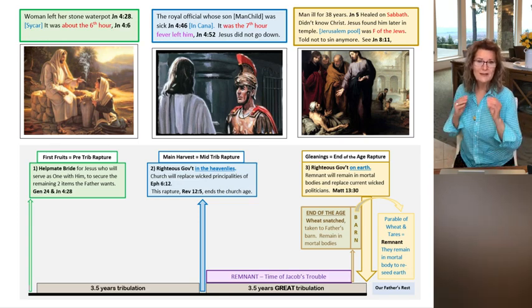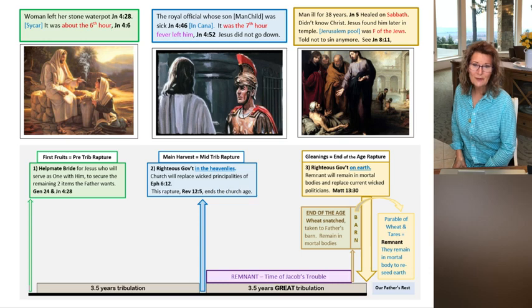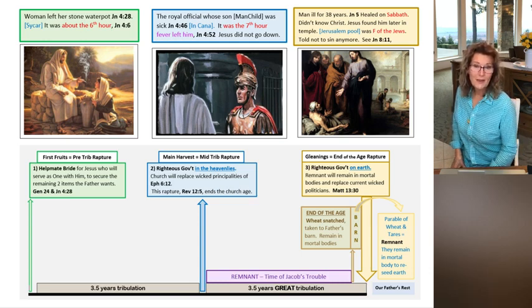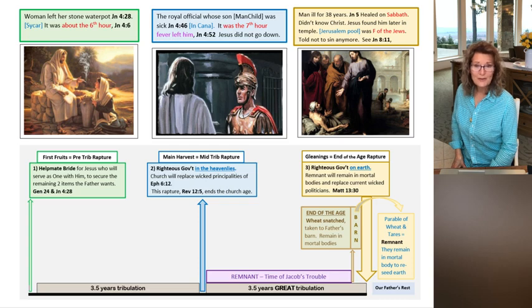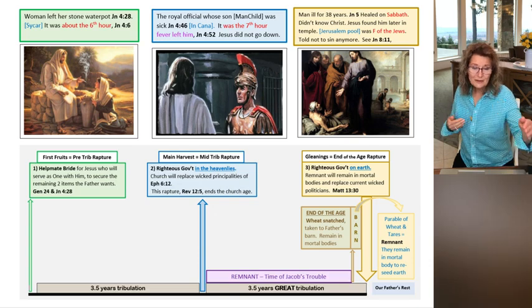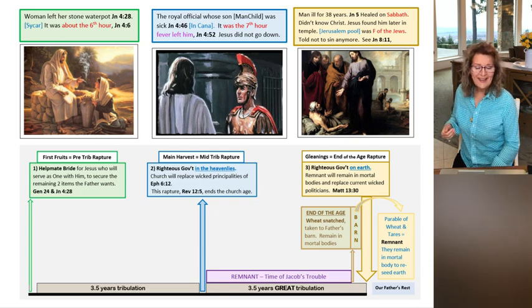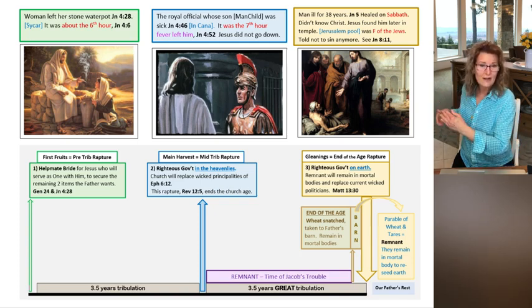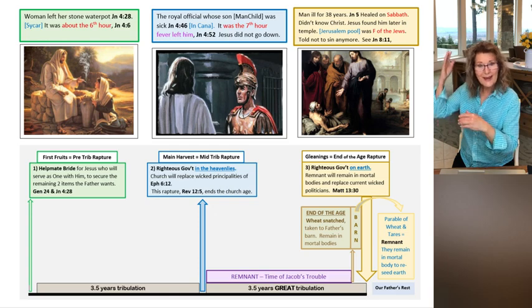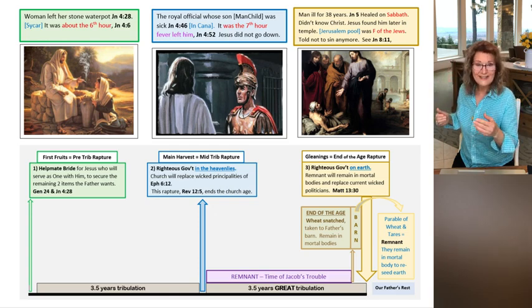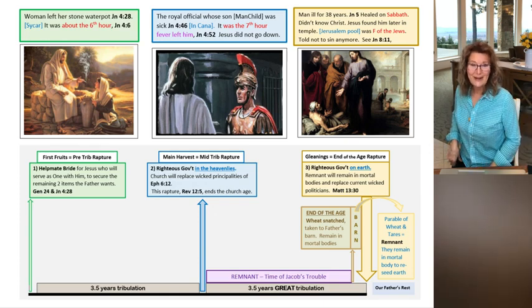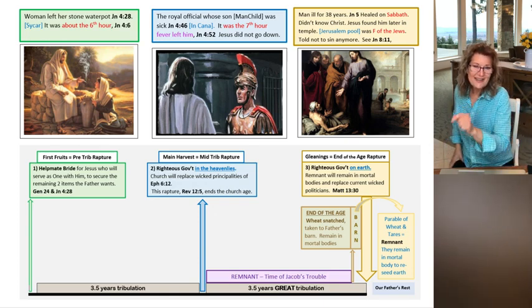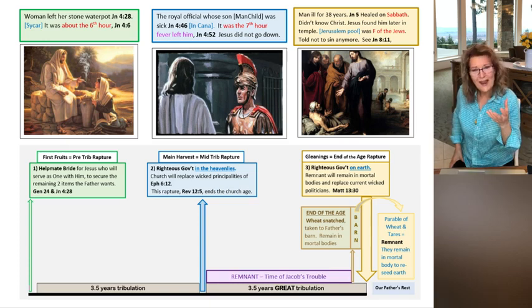Let's get back to that 38 years and the significance of that. The generation that did not believe Joshua and Caleb, God pronounced judgment on them, that for 40 years they would wander in the wilderness and that generation would not go in, however their children would. God used that 40 years of judgment for that entire generation to die - those who were aged 20 years old and up. So if they were 19 years old, it was like, I made it, I'm going in.